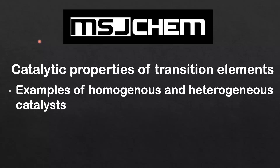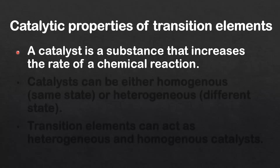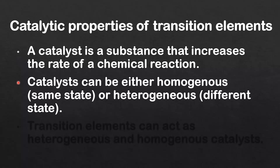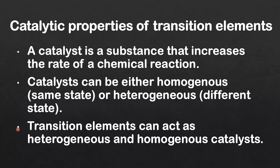This is MSJChem and in this video I am going to look at the catalytic properties of transition elements. I will look at examples of homogeneous and heterogeneous catalysts. A catalyst is a substance that increases the rate of a chemical reaction. Catalysts can be either homogeneous, which is the same state, or heterogeneous, which is a different state. Transition elements can act as both heterogeneous and homogeneous catalysts.